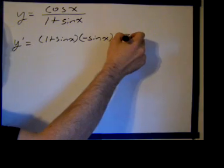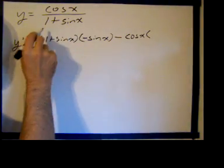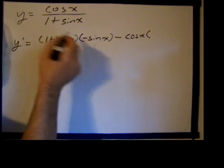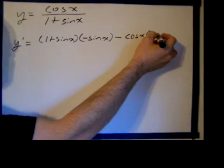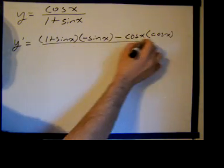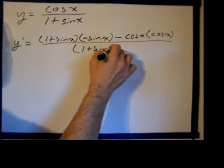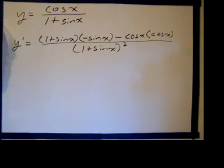Minus the numerator, which is the cosine of x, times the derivative of the denominator. The derivative of 1 is 0. The derivative of the sine of x is the cosine of x. And then that's all over the denominator, which is 1 plus the sine of x, quantity squared.